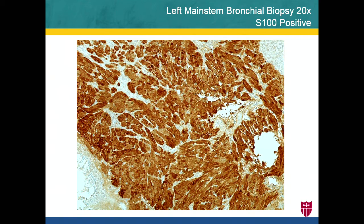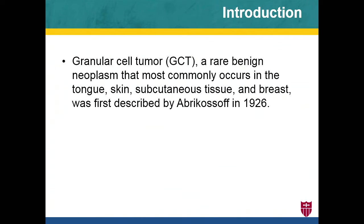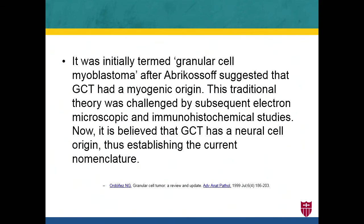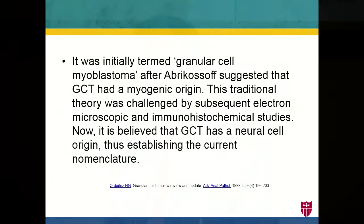Coming to our main topic — granular cell tumor of the tracheobronchial tree — granular cell tumors were first described by Dr. Abrikosov in 1926. They are seen in the tongue, skin, subcutaneous tissue, and breast, but it is very uncommon for them to present in the lung. Initially termed granular cell myoblastoma because he thought it was myogenic in origin, this theory was later challenged as electron microscopy and immunohistochemical stains became available, and around the 1960s it was agreed that the tumor was actually neural in origin, most likely related to Schwann cells.